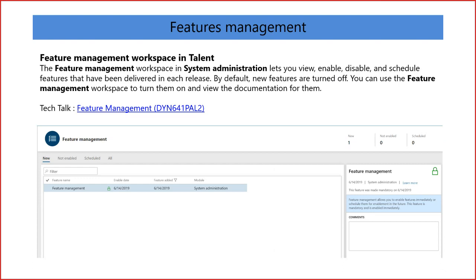Moving to the feature management workspace in talent: we already had a tech talk on feature management. This workspace lets you enable, disable, and schedule features. The idea is to enable features in your sandbox environment, test them, confirm they meet your requirements, and then go to the production environment to enable them. There is a link to view documentation from the workspace, and the feature management tech talk link provides more details and better understanding.